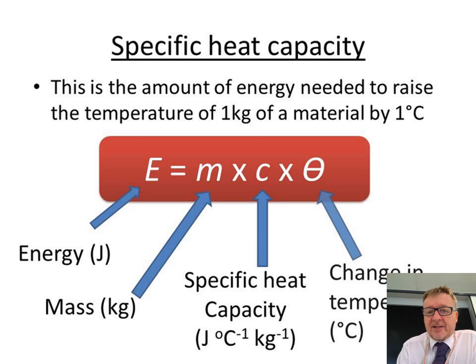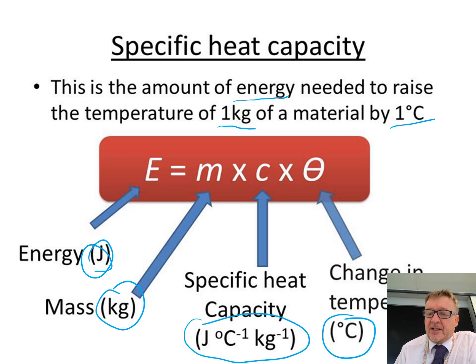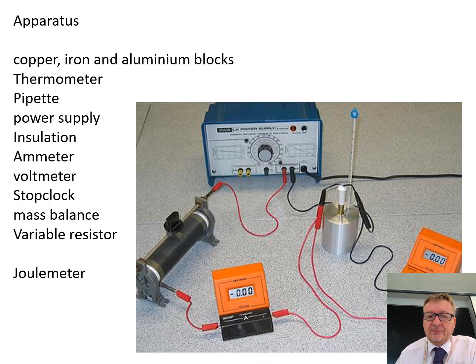Now firstly, specific heat capacity, you need to know the definition. So specific heat capacity is the amount of energy required to raise the temperature of one kilogram of substance by one degree C. This is then the formula: E equals mc theta, energy in joules, mass in kilograms, change in temperature in degrees C. These are then the units of specific heat capacity, but what I would tend to do is I'll tend to write it as joules per kilogram degrees C. It's just easier to remember than the little minus ones on there.